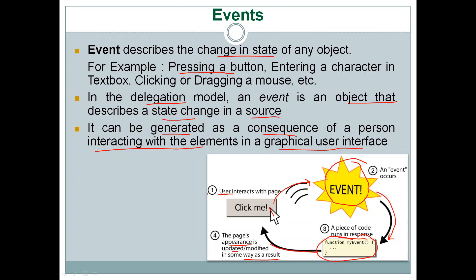The GUI might also be modified in response to that event. So whenever an event occurs, some piece of code is executed and the GUI may be modified. For example, in many GUI applications, whenever the user clicks on a check box, a check sign appears — the event occurs and as a consequence the GUI is updated. The appearance changes whenever an event occurs.